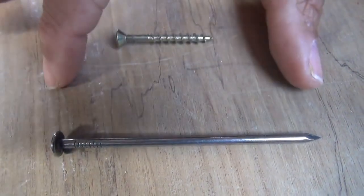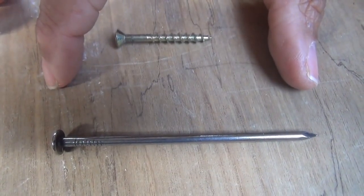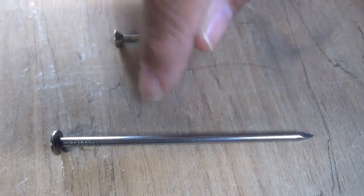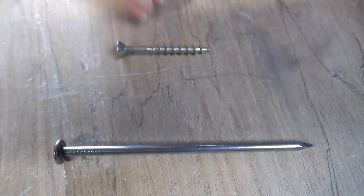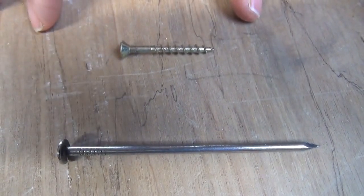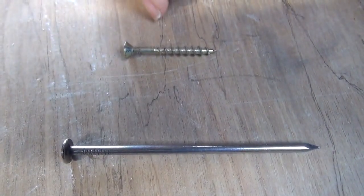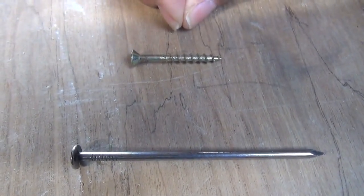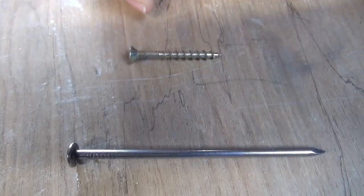nails are great for construction because of shear strength. Remember, they'll bend, but they don't break. And screws are really superior when it comes to tensile strength. They're not going to back out of whatever you bring together. That's why they're great for drywall, and they're great for stair treads.